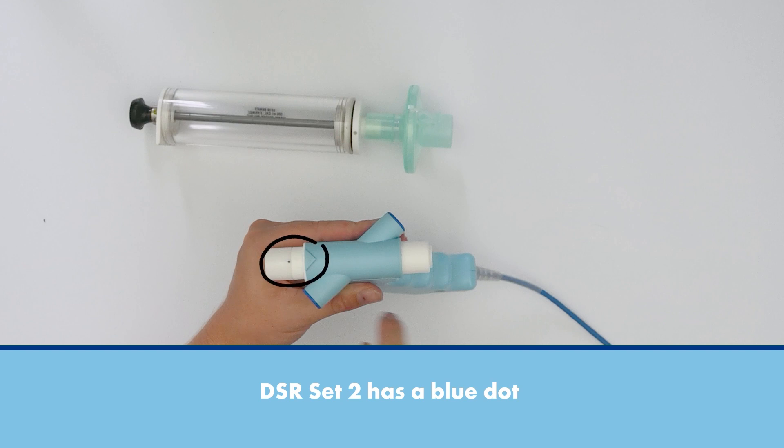For children and adults weighing more than 15 kg, you will need to use Dead Space Reducer Set 2.